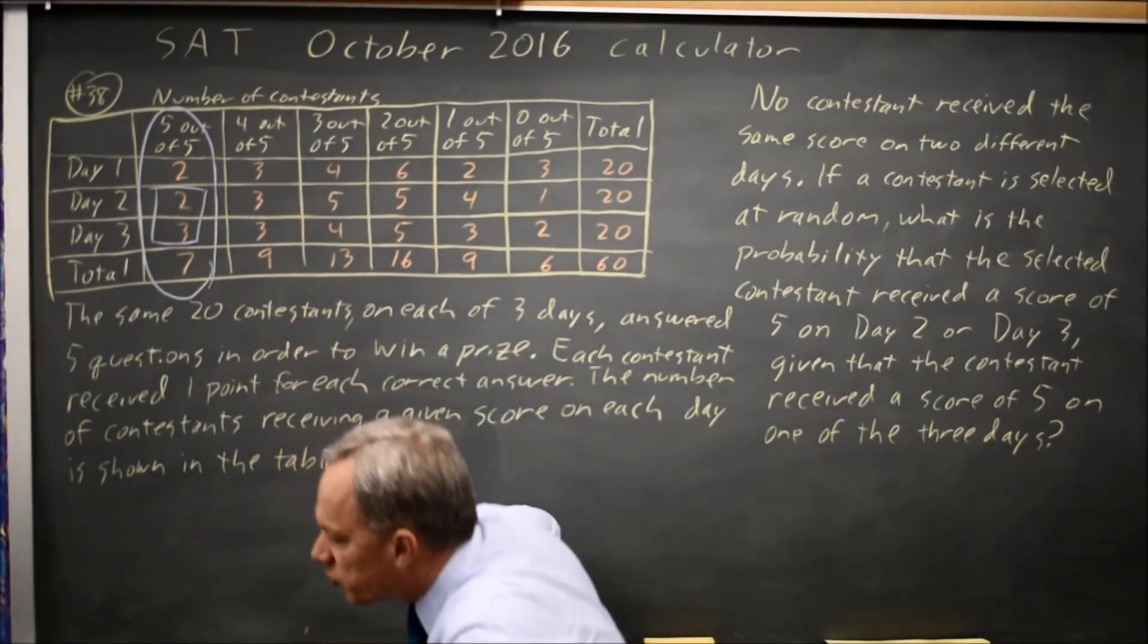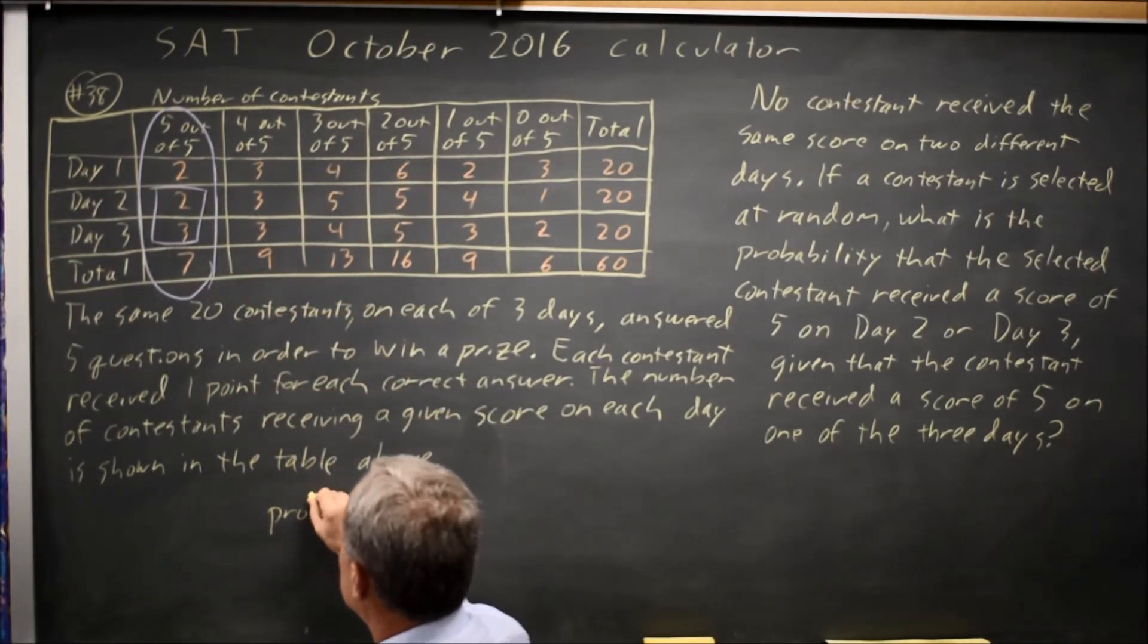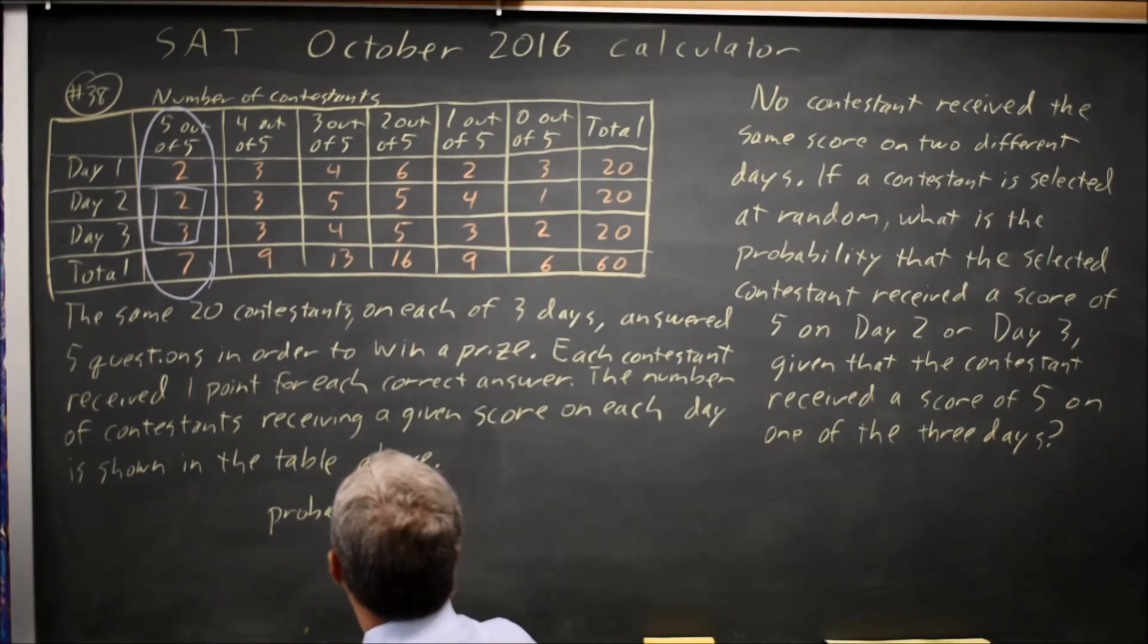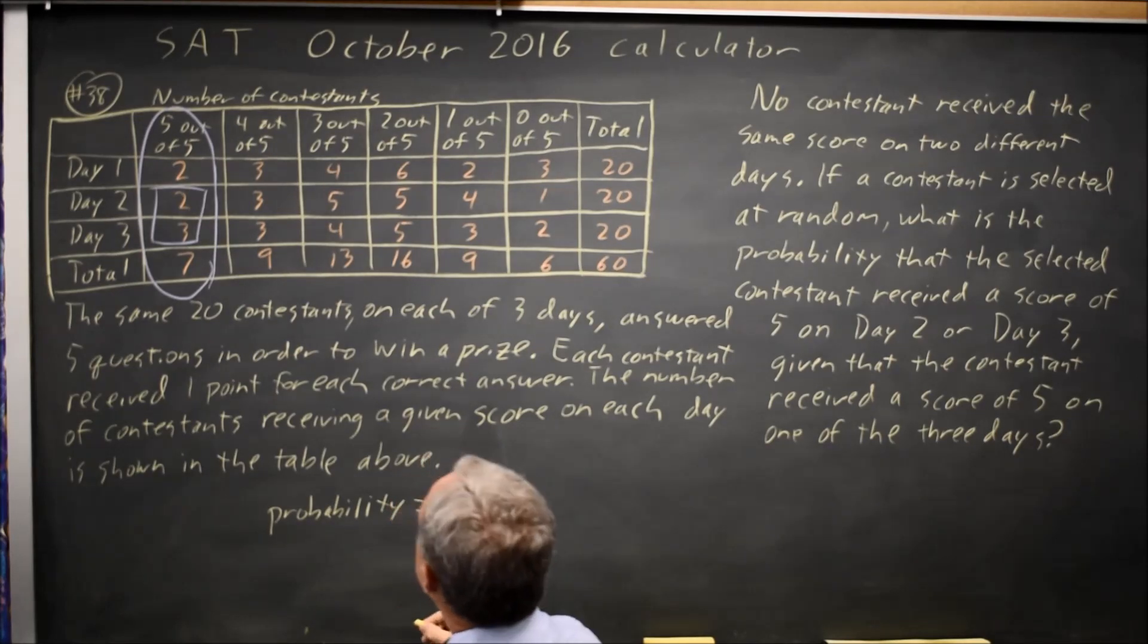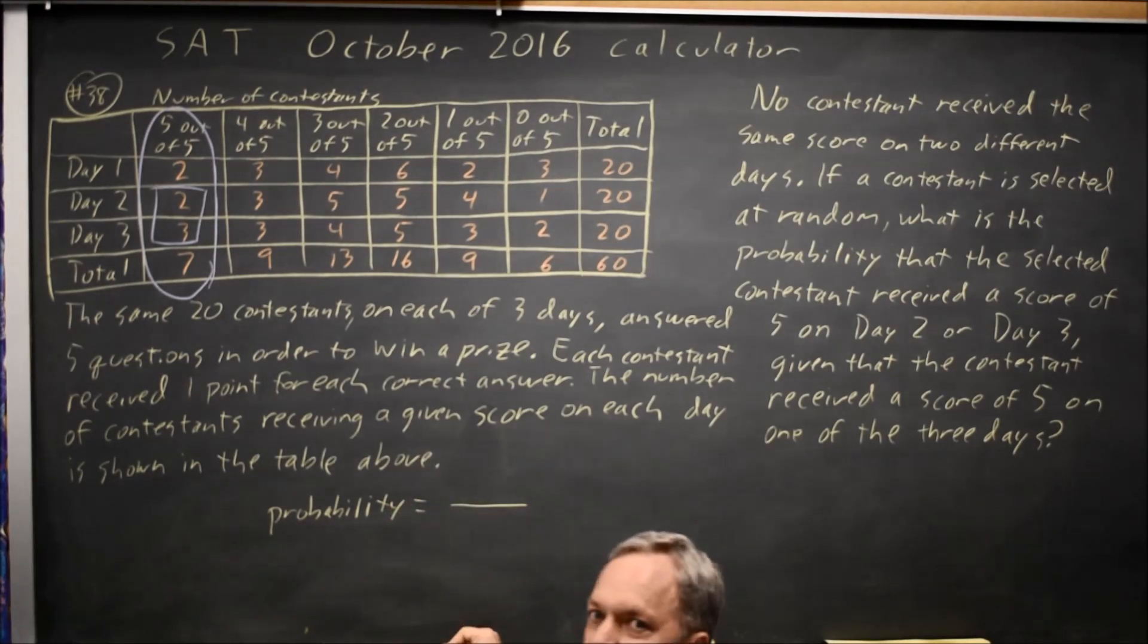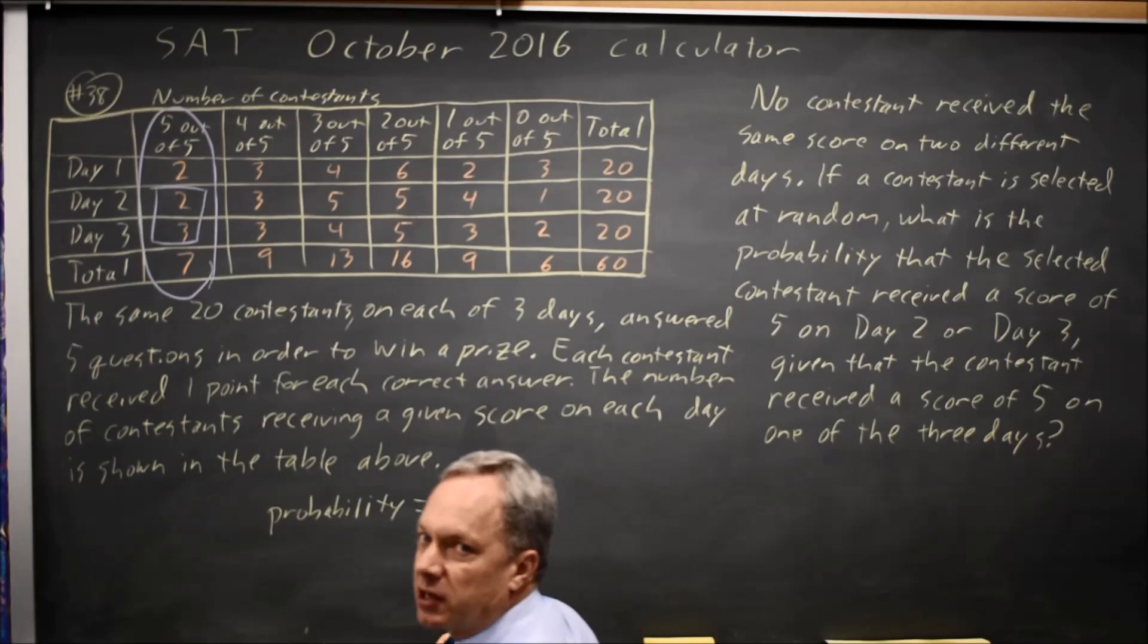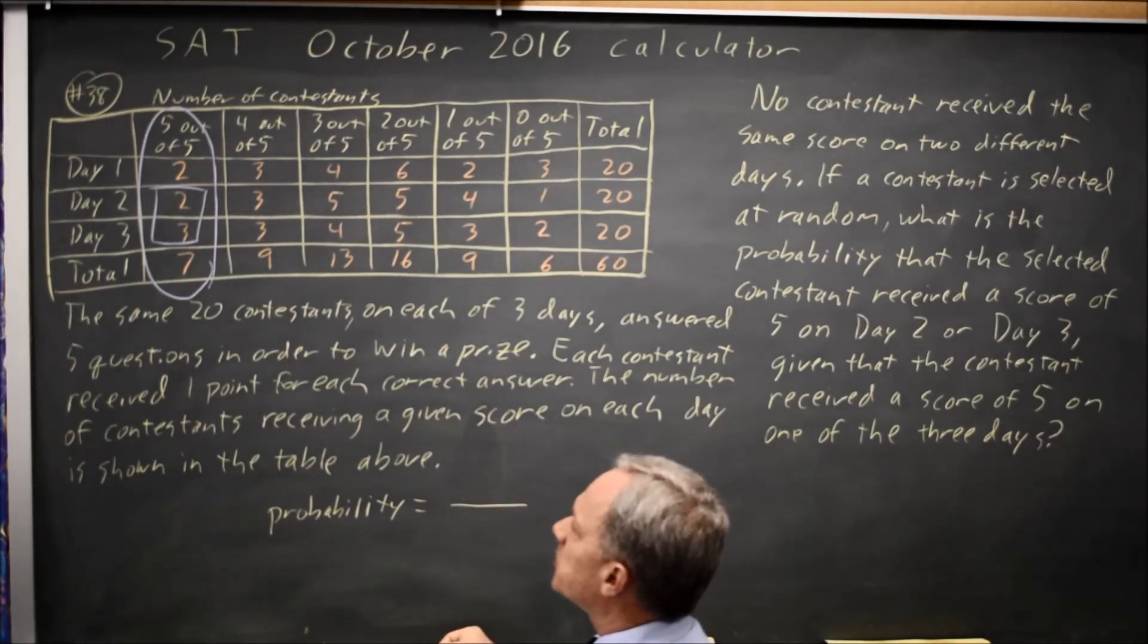When you're looking for a probability from a table, your numerator is the number of successful outcomes among those in the denominator and the denominator is all those that might have been chosen.